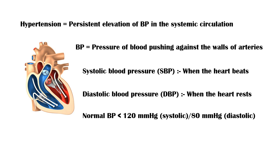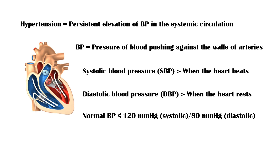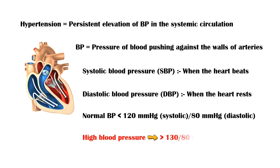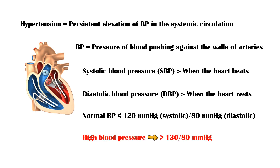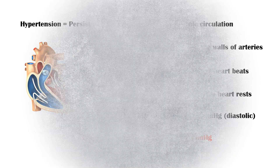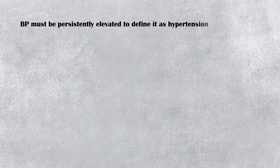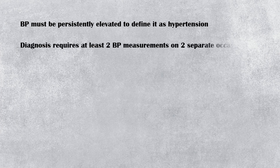According to the latest American Heart Association and American College of Cardiology Guidelines, hypertension is defined as a blood pressure over 130 systolic and 80 diastolic. Blood pressure must be persistently elevated in order to define it as hypertension, so the diagnosis requires at least two blood pressure measurements on two separate occasions.